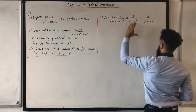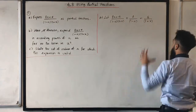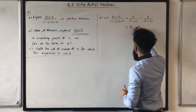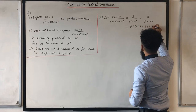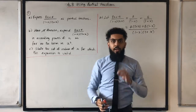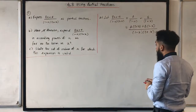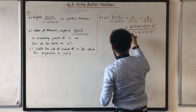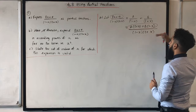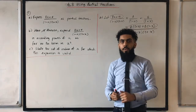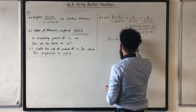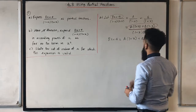I need to multiply the first fraction top and bottom by (2 plus x) and the second fraction top and bottom by (1 minus x). Doing that, I can now compare the numerators. In the numerator I've got 8x plus 4, and on the other side I've got A(2 plus x) plus B(1 minus x). By comparing I can form the equation: 8x plus 4 equals A(2 plus x) plus B(1 minus x).